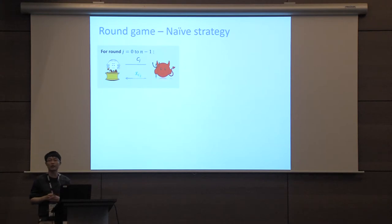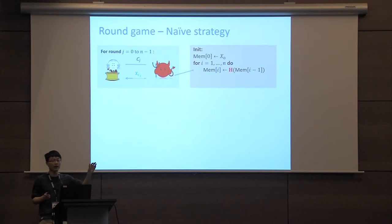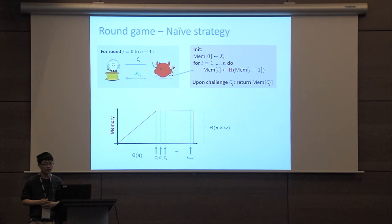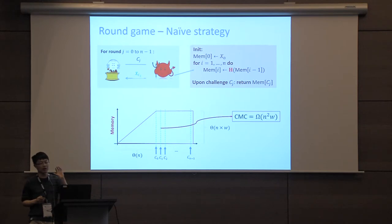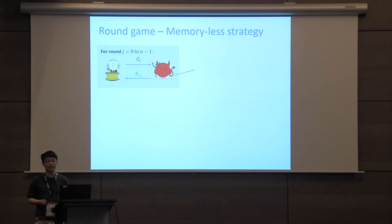The simplest naive strategy answers all challenges immediately but requires large memory. Concretely, during the initialization phase the strategy computes all x values and stores them in memory. Upon a challenge Cj it can return x_{Cj} right away. Let n be the number of challenges and w the number of bits per challenge. The strategy needs theta(n) time and theta(nw) memory, so the CMC is omega(n^2 * w) — remember this value n^2 * w is very important.